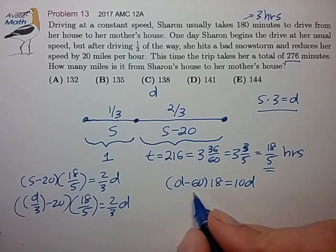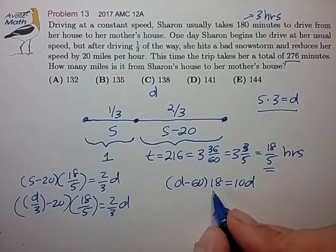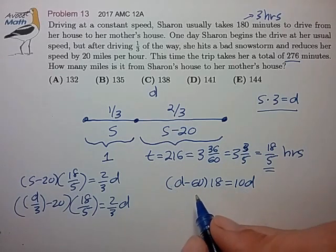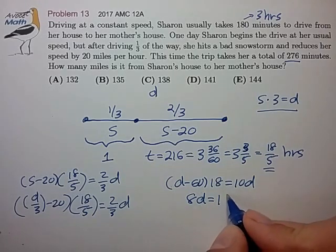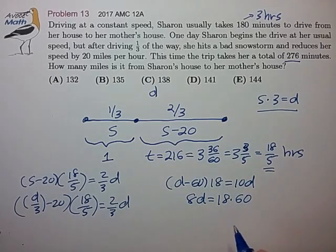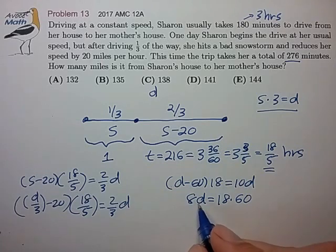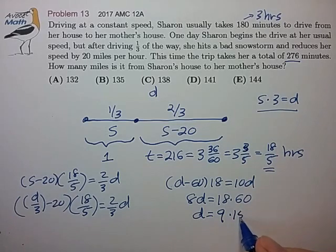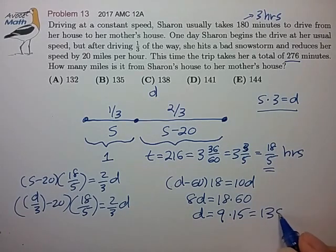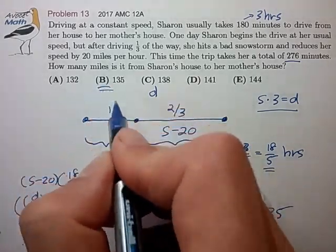To arrive at D minus 60 equals 10 D. So, what is that now? That's 18 D minus 10 D, that's 8 D, equals 18 times 60. We can divide out by the factors of 2 to find out that D equals 9 times 15, or 135 for choice B. Thank you.